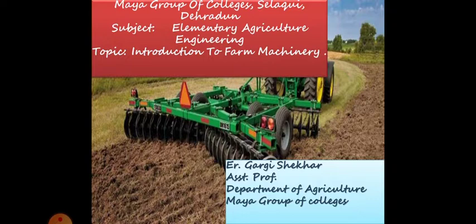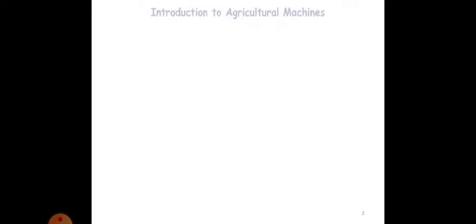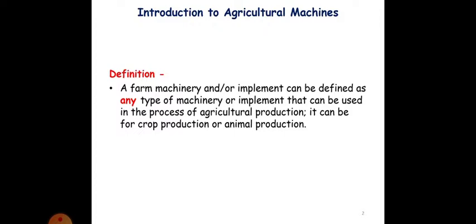Talking about farm machinery, I will give you a preview today in this upcoming video. An introduction to agricultural machines. Farm machinery is an implement that can be defined as any type of machinery or implement used in the process of agricultural production, for crop production or for animal production.